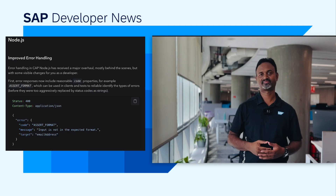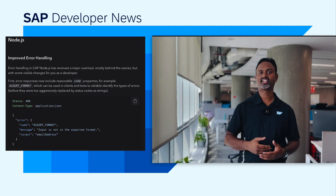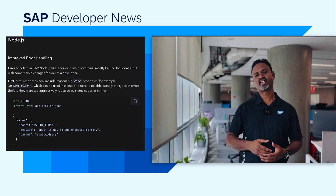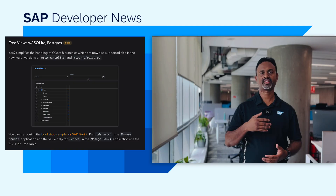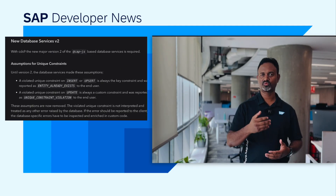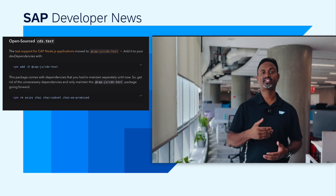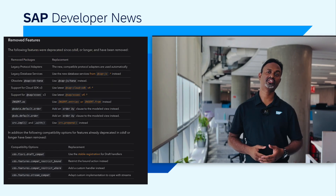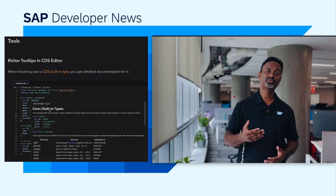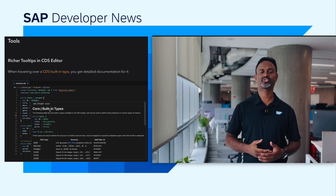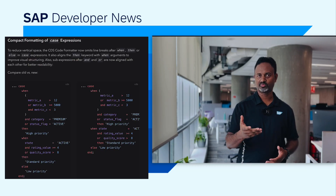Updates for Node.js include improved error handling with support for the code property in the error response, support for tree view with SQLite and Postgres SQL, new database services P2, and open-sourced CDS test package. There is also a list of removed features and important changes in Node.js and CAP Java. Updates for the tools include richer tooltips in the CDS editor which show detailed documentation on hover, and compact formatting for case expressions.